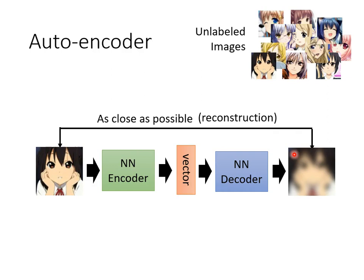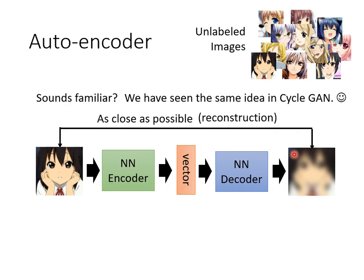You may have a sense of déjà vu, because this concept was already mentioned when teaching CycleGAN. For CycleGAN, we need two generators: the first transforms an image from domain X to domain Y, and the other reconstructs the image from domain Y. The closer the original image is to the transformed image, the better. The concept of autoencoder is exactly the same as that of CycleGAN. The training procedure needs no annotated data — you only need to collect lots of images to train an autoencoder. It is a method of unsupervised learning, just like the pre-training step of self-supervised learning.